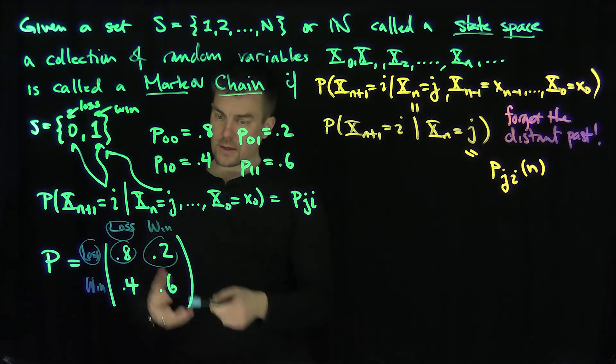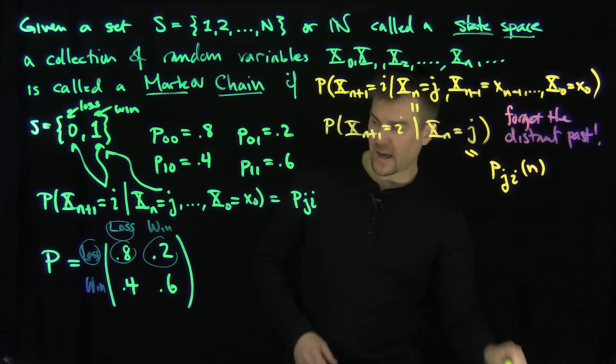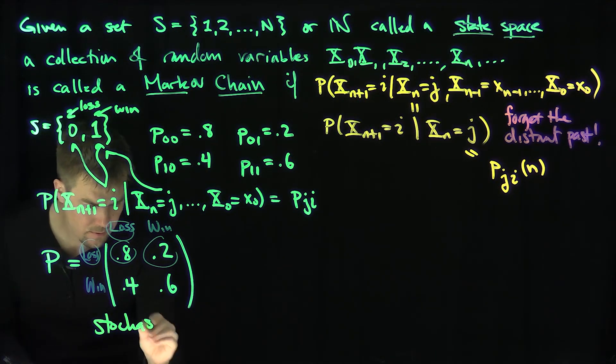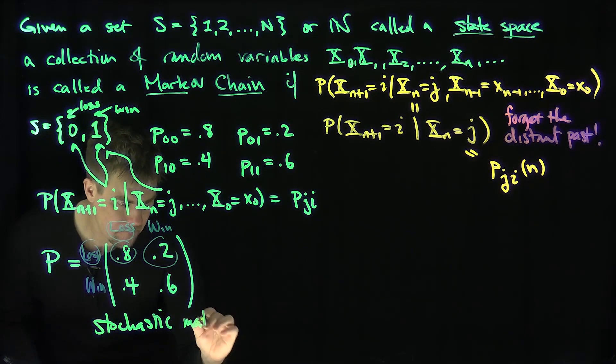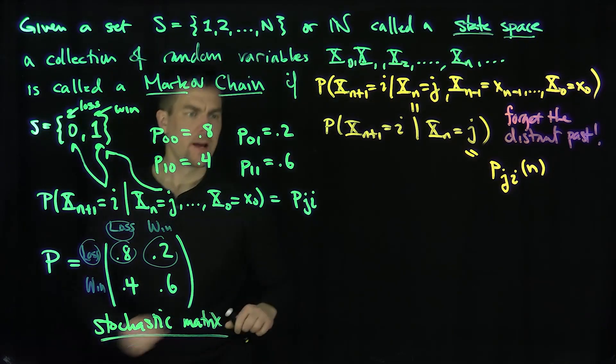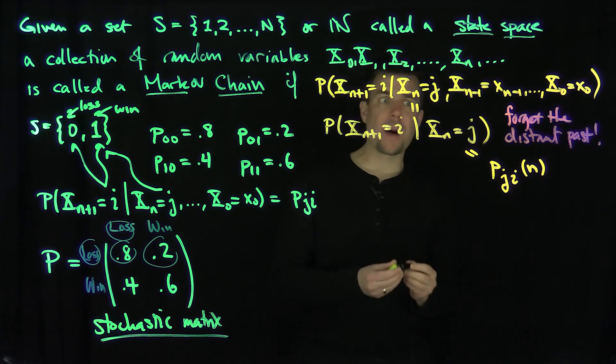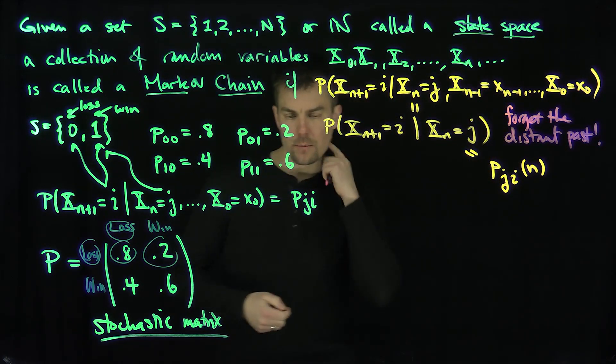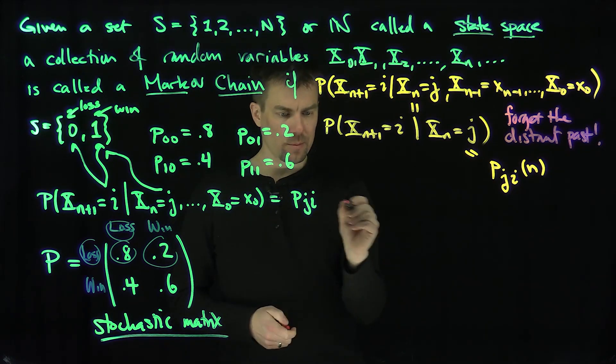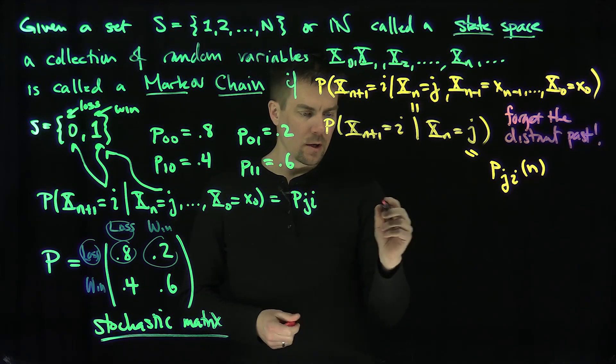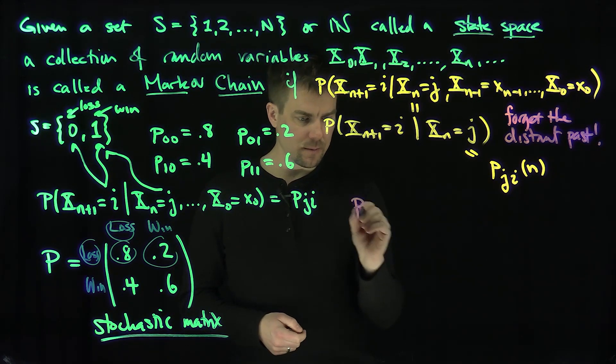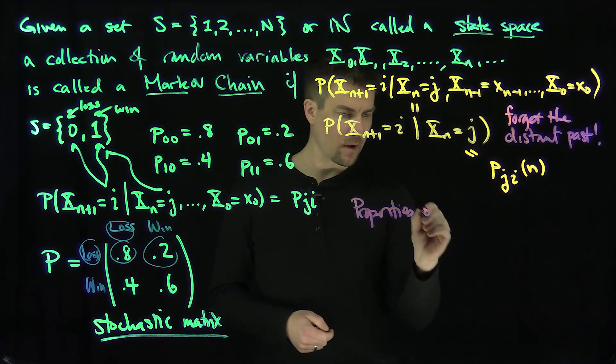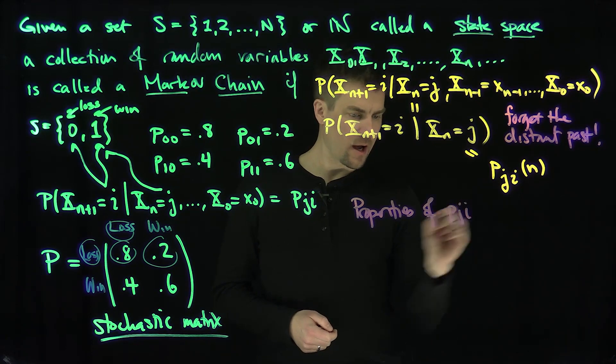We can notice that this is called a Markov matrix or stochastic matrix. So let's determine some properties of these P_ji. Notice properties of P_ji.